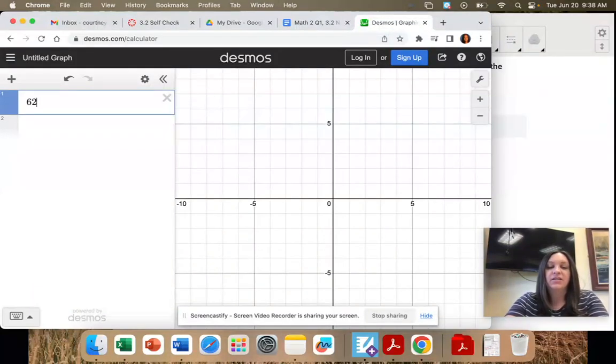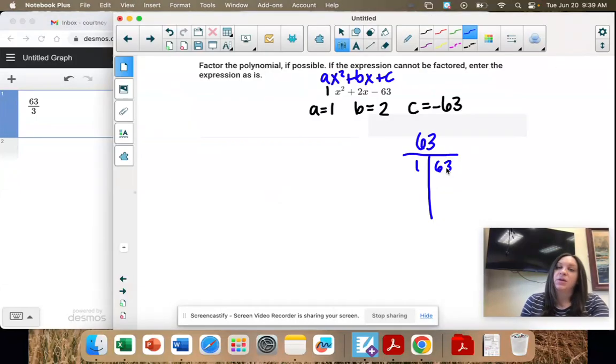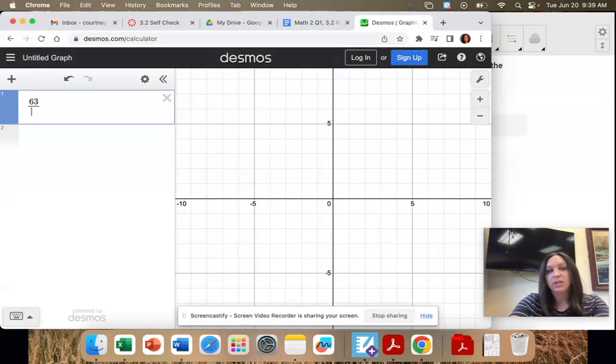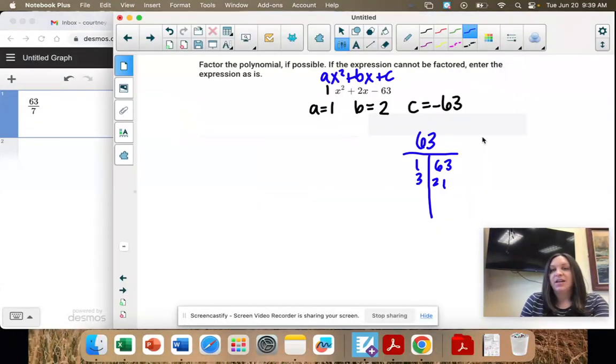And then just start dividing. It does not divide by 2. 3 and 21. 4 doesn't work, 5 doesn't work, 6 doesn't work. 7 and 9.